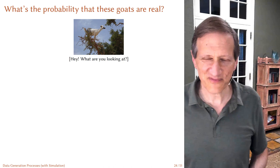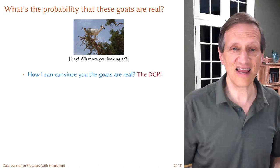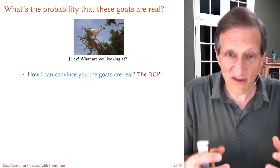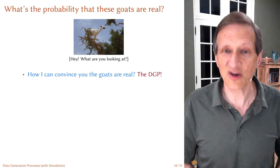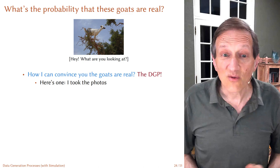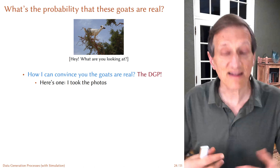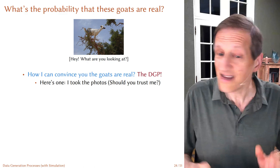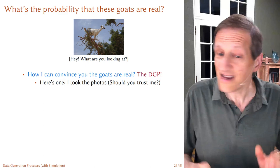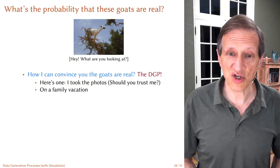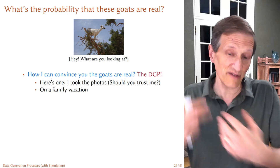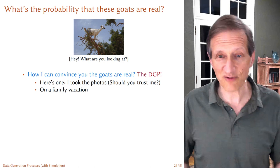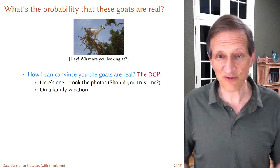How can I convince you that these goats are real? What's the key piece of information that's missing? It's the data generation process. Once you have the data generation process — the verified story as to where they came from — then you can believe the goats are real or not. Well, I took the photos. In science we don't trust, we verify — we lock down every assumption whenever possible. I didn't just take the photos; I was on a family vacation.